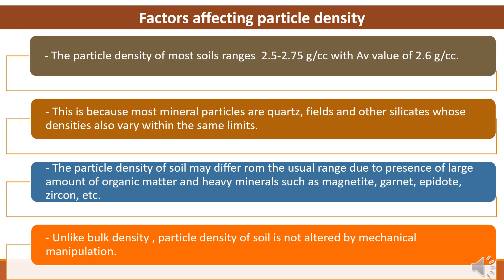The particle density of most soils ranges within the narrow limit of 2.5 to 2.75 grams per cubic centimeter, with an average value of 2.6 grams per cubic centimeter. This is because most mineral particles are quartz, feldspars, and other silicates whose density also varies within the same limits. Particle density of soil may differ from this usual range due to the presence of large amounts of organic matter and heavy minerals. Unlike bulk density, particle density of soil is not altered by mechanical manipulations.